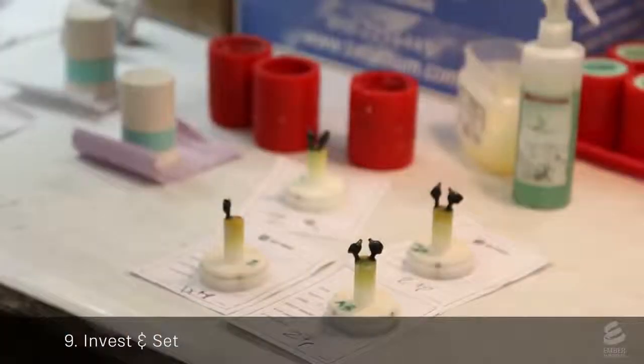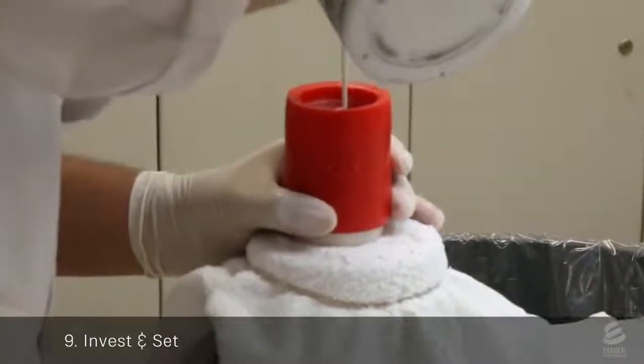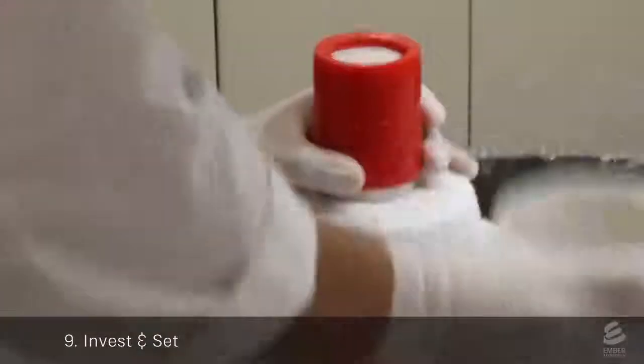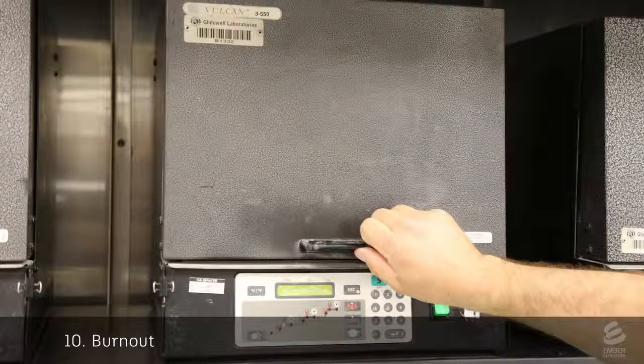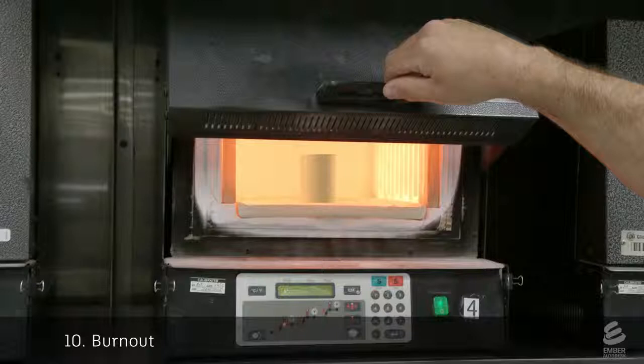The sprued crowns are put into a mold and a technician mixes up the investment material and pours it around the crowns. When the investment is completely set, it's put into an oven until the heat completely vaporizes the wax and 3D printed crown, leaving a crown-shaped void inside the investment.